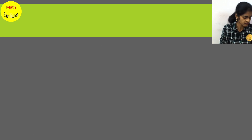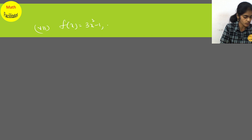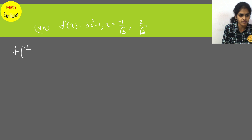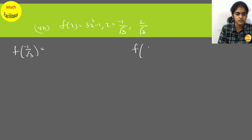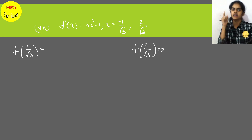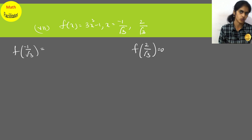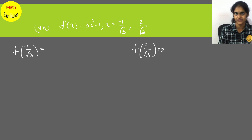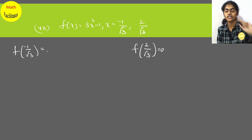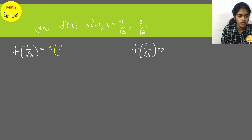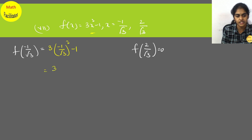For f(x) = 3x² minus 1, verify x = −1/√3 and x = 2/√3. Substituting x = −1/√3: 3 into (−1/√3)² minus 1 equals 3 into (1/3) minus 1. The 3s cancel, giving 1 minus 1 equals 0. So f(−1/√3) = 0, confirming −1/√3 is a zero of the polynomial.